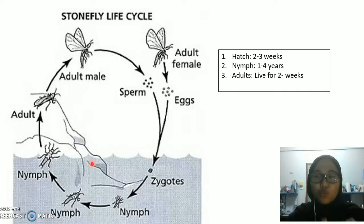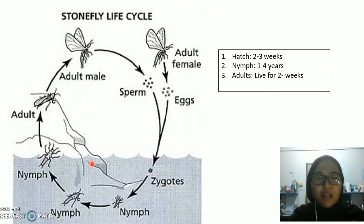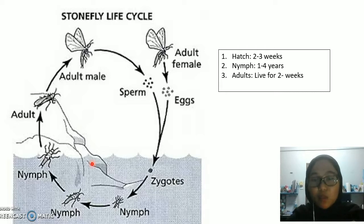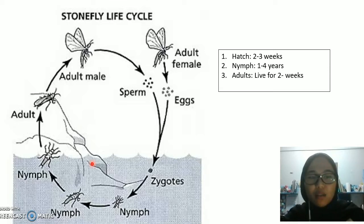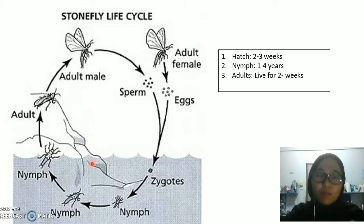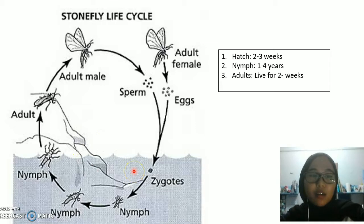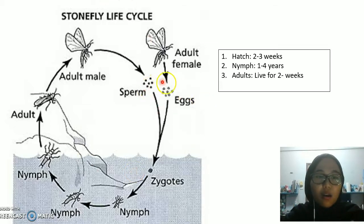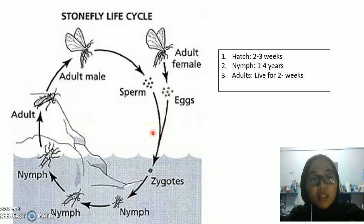Stoneflies tend to mate in swarms. They are often found swarming near some sort of vegetation near the river or stream. This can be any plant or trees found nearby. Sometimes they will meet on the ground. Males will attract the female by beating their bodies on the vegetation or ground. Some species of stonefly will mate repeatedly, creating multiple offspring. The eggs are then dropped underwater and the process begins again.